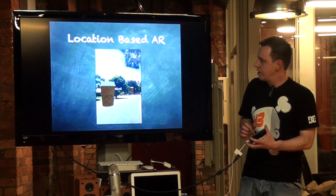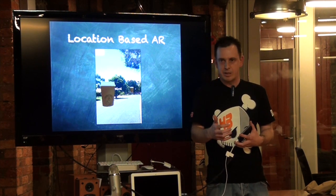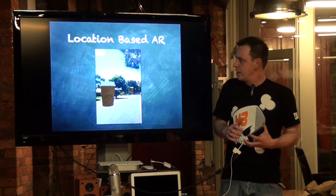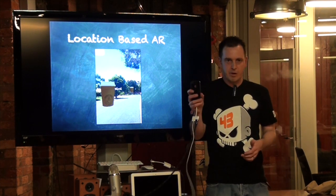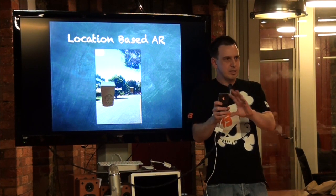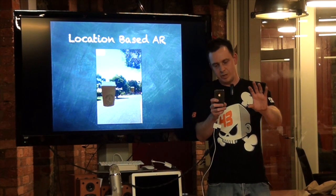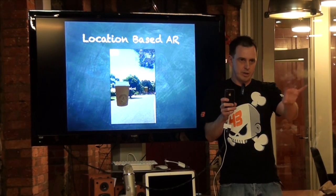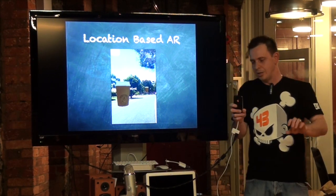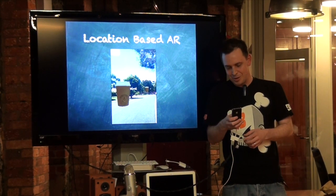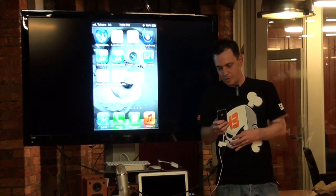Location-based augmented reality has been around a bit longer. As soon as devices got GPS, compasses, and accelerometers, it became possible to hold the device up and see objects projected through the camera where they're located in the physical world. It's a lot easier to demonstrate than to talk about, so I've thrown together a simple demo.